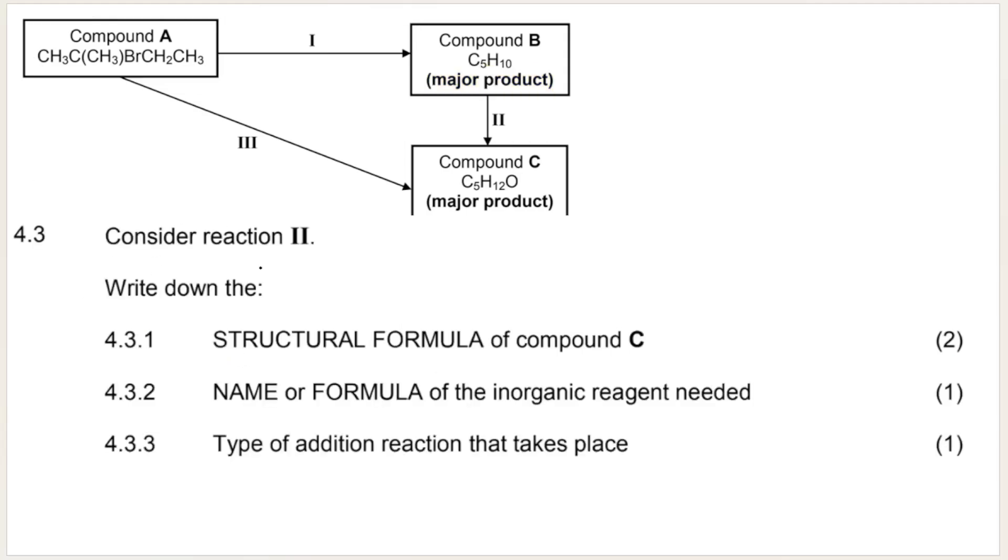Next question, 4.3. Consider reaction number two. We know that this one over here is an alkene. Then something happens to it and it now has still five carbons, 12 hydrogens, and an oxygen, and it's the major product. So if we start with an alkene, which has double bonds and we end up with something with an oxygen, we are going to end up with an alcohol. That's where the oxygen is. It forms an alcohol. So what happened in this reaction? It must have been an addition reaction. And if you read on in the question, you would have seen, they say, write down the type of addition reaction. But first I want to know the structural formula of compound C.